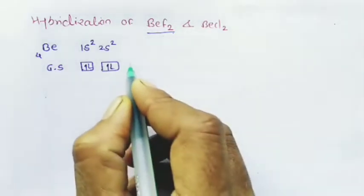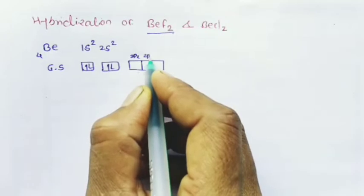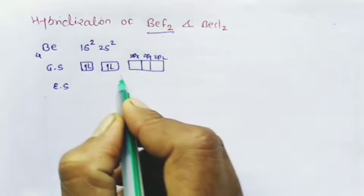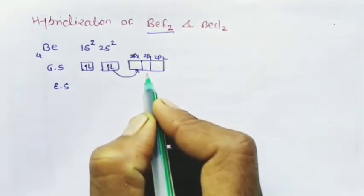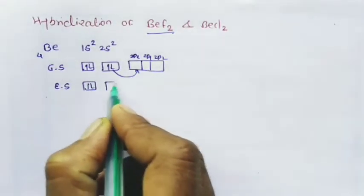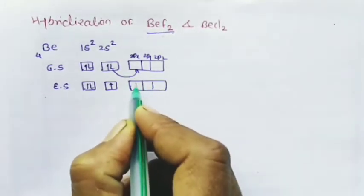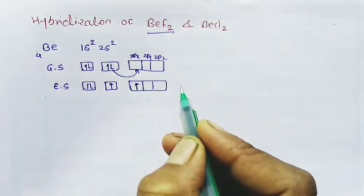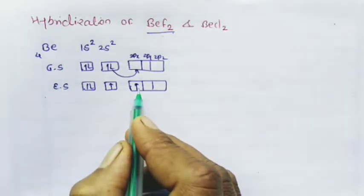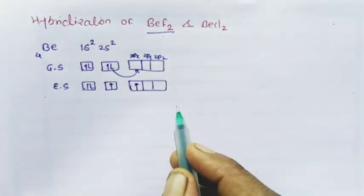In the excited state of beryllium, 1 electron from the 2s orbit is promoted and transferred into the vacant 2px orbit. So in the excited state, the configuration becomes 2s¹ and 2px¹. This gives 2 unpaired electrons. Therefore, the excited state satisfies the divalency of beryllium.